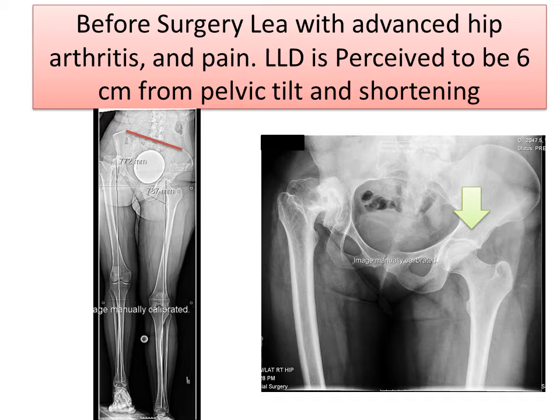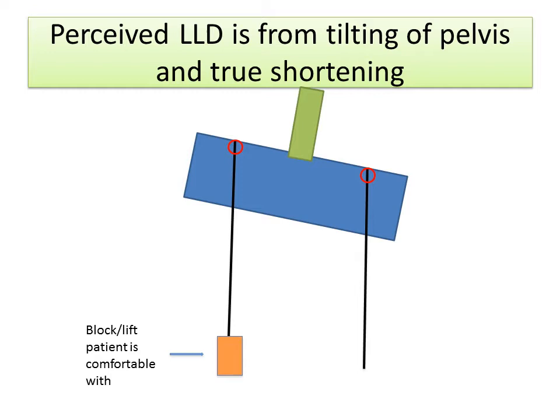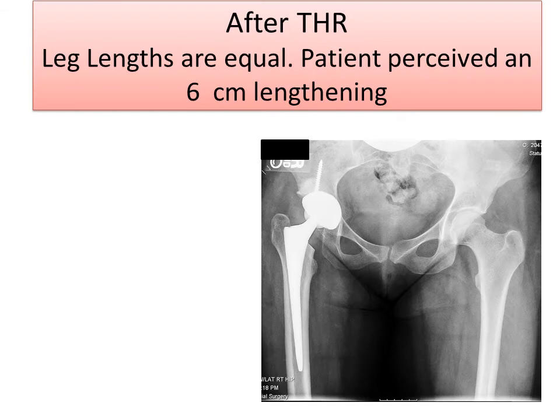Notice the left hip is normal with an acetabulum ball and socket, and you see the difference between that and the right hip, which has a collapsed head and an associated adduction contracture. This schematic diagram helps illustrate the shortening coming from both the actual shortening of the leg, but also in large part due to the tilt of the pelvis.